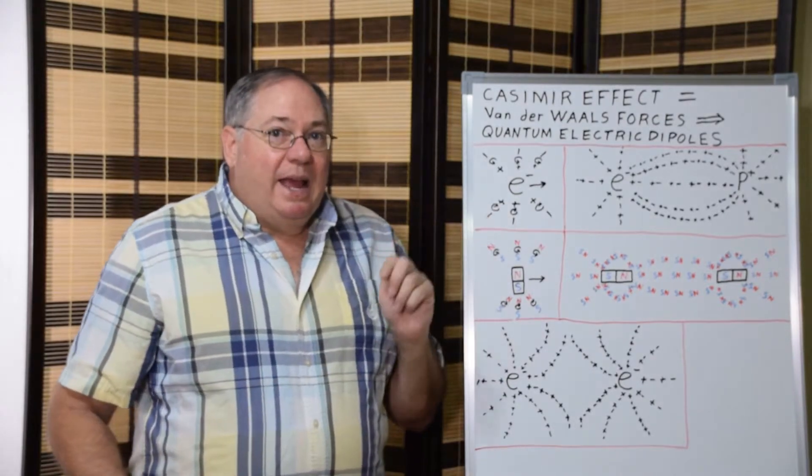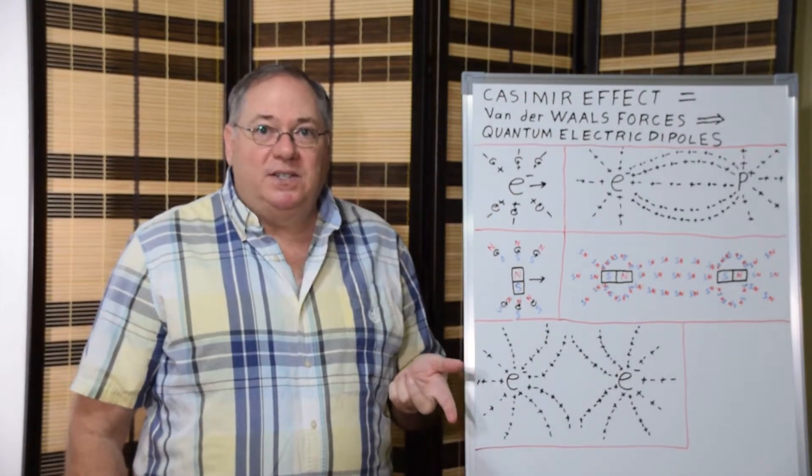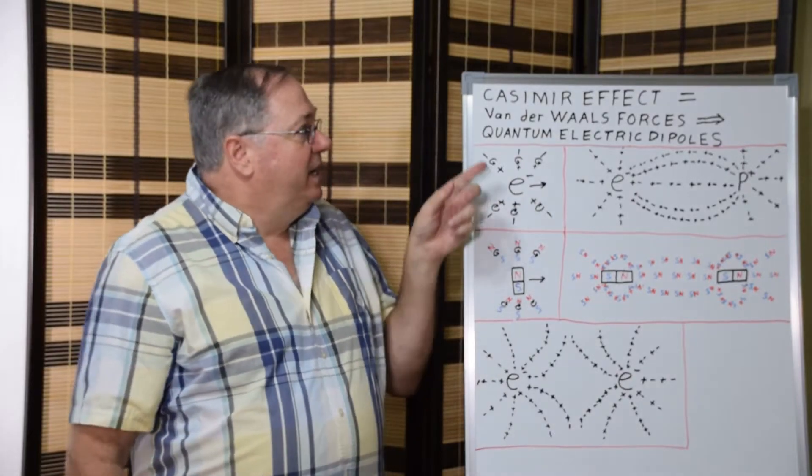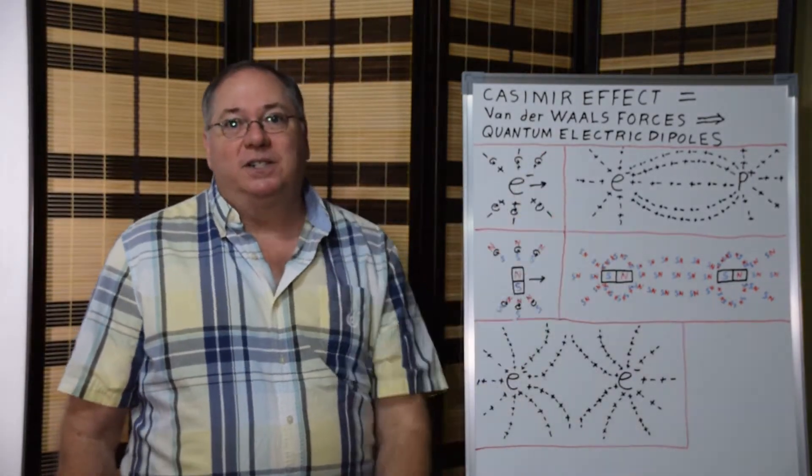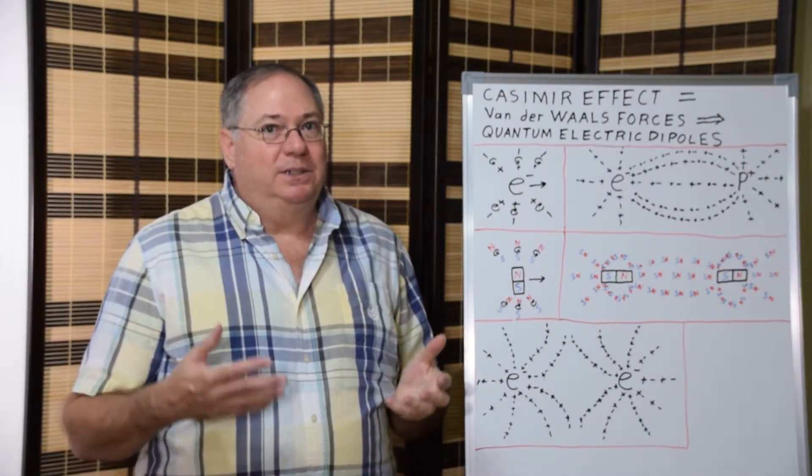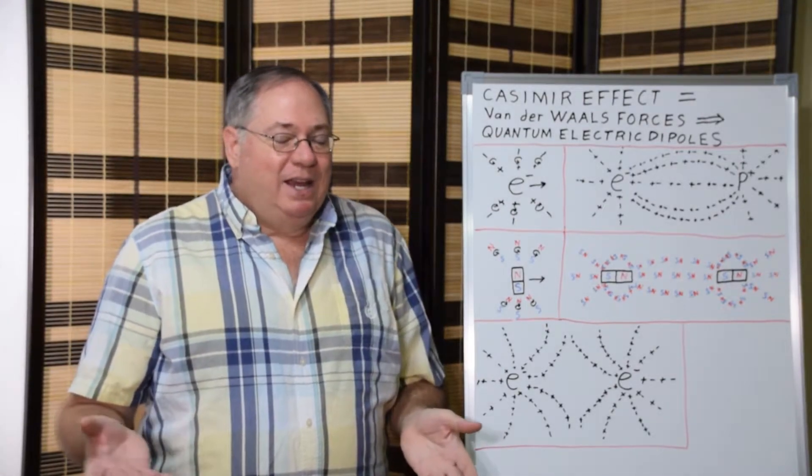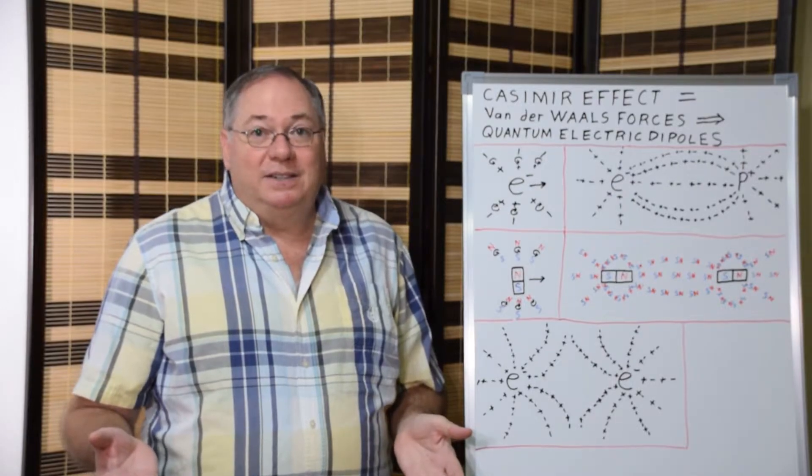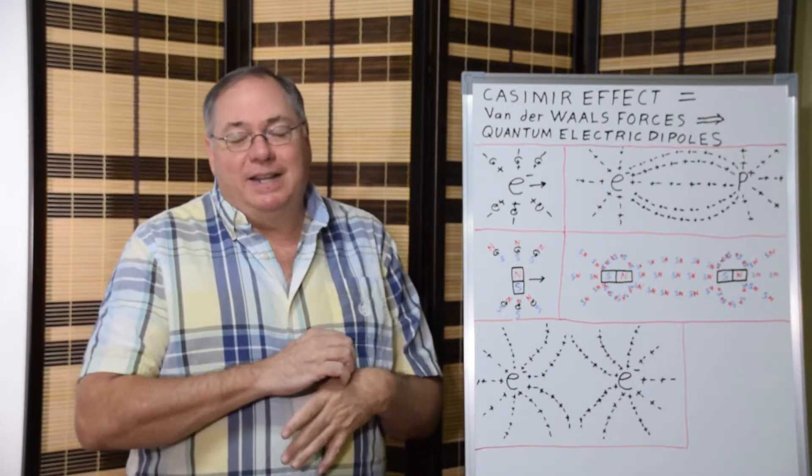So the Casimir effect proves the existence of Van der Waals forces, which proves the existence of quantum electric charge dipoles, which confirms the particle pair model, which has been around since the discovery of the positron in the late 20s, early 30s.